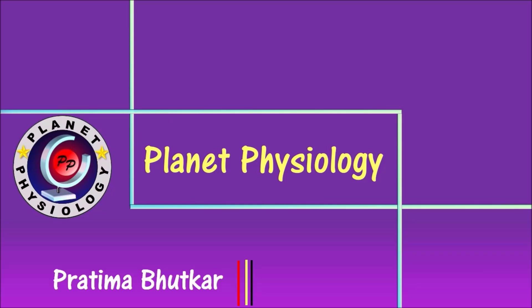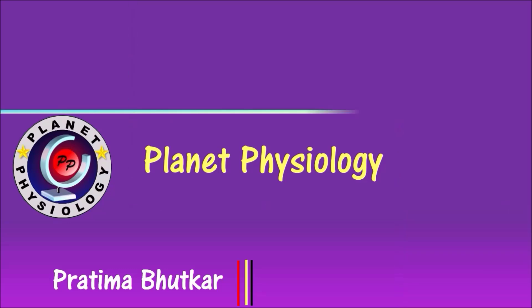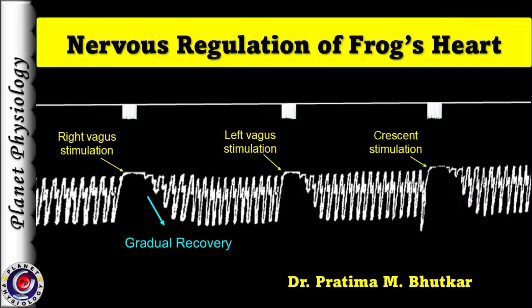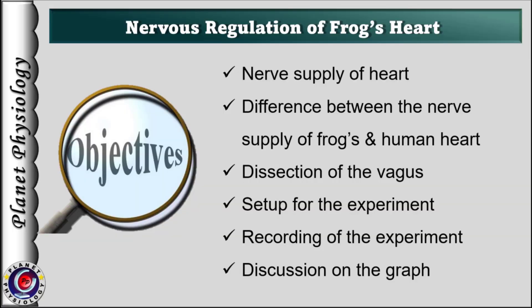Hello everyone, this is Pratima and welcome back to Experimental Practical Series. Till now we have covered all the properties of cardiac muscle, and today we shall study Nervous Regulation of Frog's Heart. In this video, first we will discuss the nerve supply of frog's heart and how it differs from that of human heart, how to dissect for the vagus nerve, experimental setup for the practical, how to record the graph, and finally we shall discuss the important questions on this topic. So let's begin with the nerve supply of the heart.